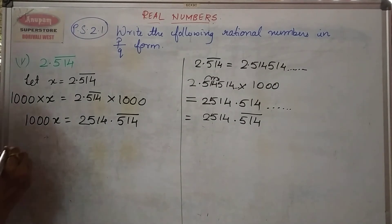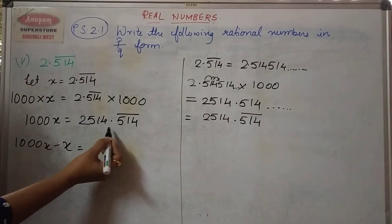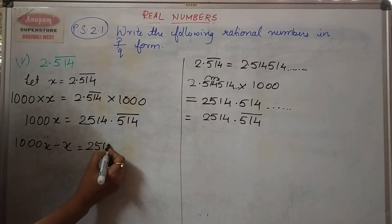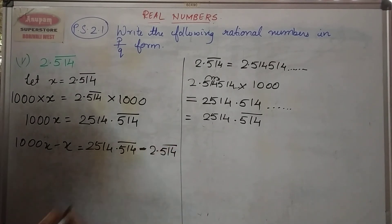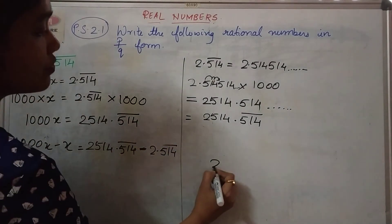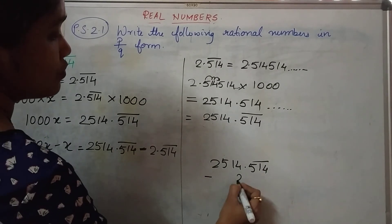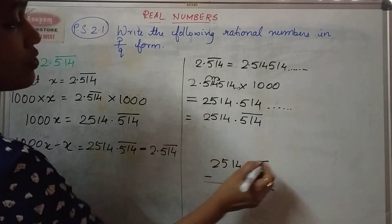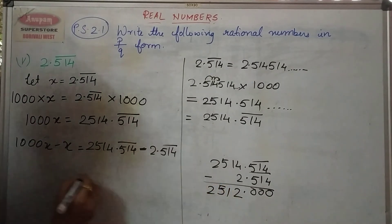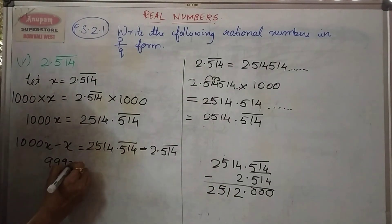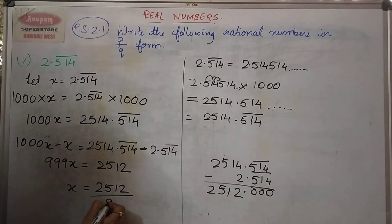Now subtraction: 1000x minus x is equal to 2514.514 bar minus 2.514 bar. Subtracting the right hand side: 2514.514 bar minus 2.514 bar — the repeating decimals cancel — giving 2512. So 999x is equal to 2512, which means x is equal to 2512 upon 999.